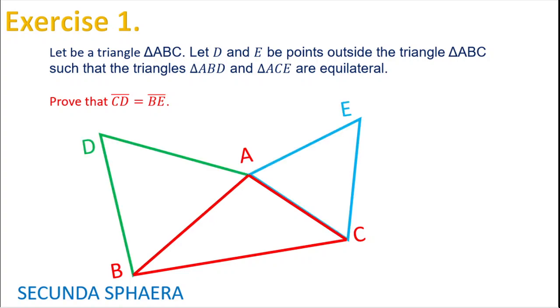Here we have those points such that triangles ABD and ACE are equilateral. So here we already have those triangles being equilateral.